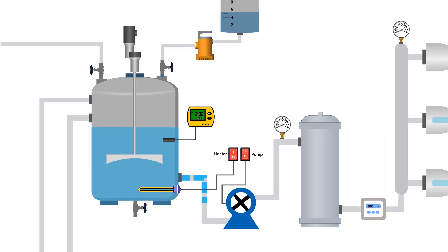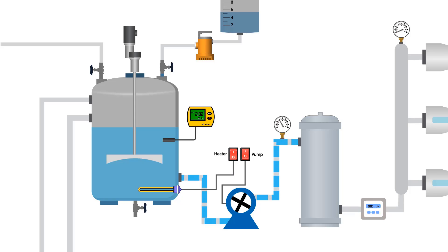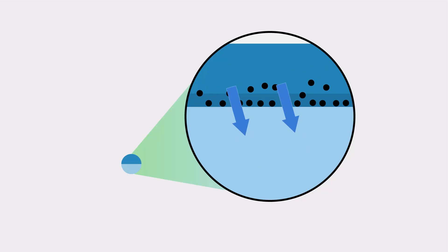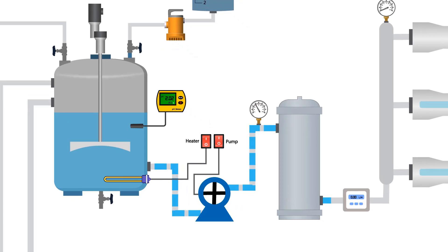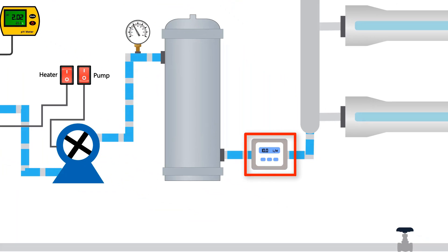Run the pump to transfer the prepared solution to the micron cartridge filter. This filter allows fluids smaller than 5 microns to pass through while blocking particles larger than 5 microns, functioning as a sieve. Observe the flow meter; it displays the flow rate of the passing fluid.